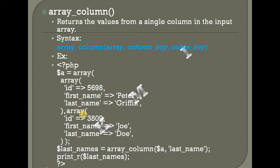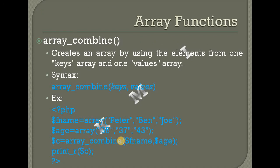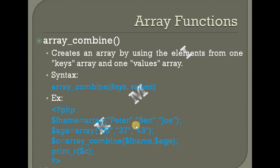Every basic column has a last name. Find a last name — last name is the key. Array combine: for the key values, we will combine. If you have a key value, then you will combine. F_name is the name — Peter, Ben, Joe. The age values: if you want to combine the key values — Peter 35, Ben 35, Joe 43 — we will combine.